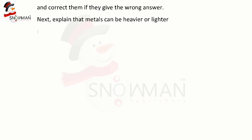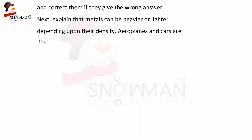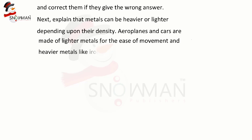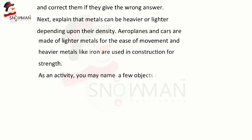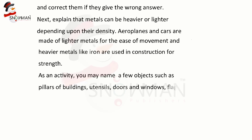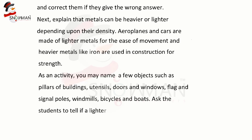Next, explain that metals can be heavier or lighter depending upon their density. Aeroplanes and cars are made of lighter metals for ease of movement, and heavier metals like iron are used in construction for strength. As an activity, name a few objects such as pillars of buildings, utensils, doors and windows, flag and signal poles, windmills, bicycles, and boats. Ask the students to tell whether a lighter or a heavier metal should be used to make each one.